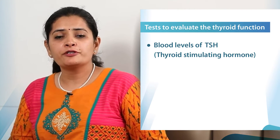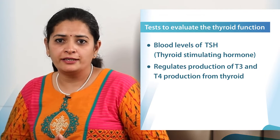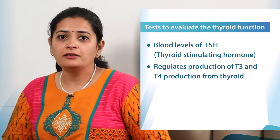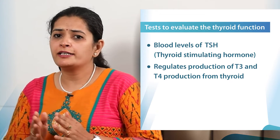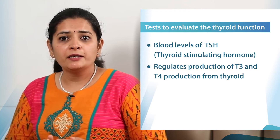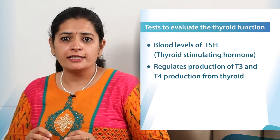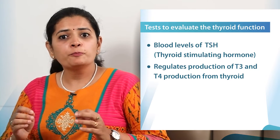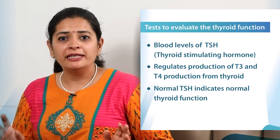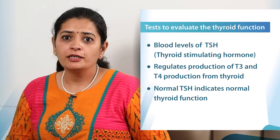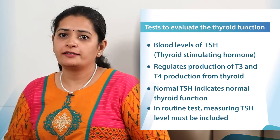There is another very important hormone we check called TSH — thyroid stimulating hormone. This is produced by the pituitary but regulates the production of T3 and T4 from the thyroid gland. TSH is a very stable, reliable and sensitive hormone. TSH values do not change frequently, and they are very sensitive to any small change in T3 and T4. So practically, if your pituitary gland is normal, a normal TSH means your thyroid function is absolutely normal. So if you are doing a routine test, TSH is the hormone that must be included.